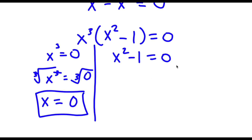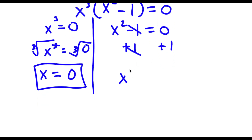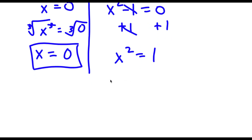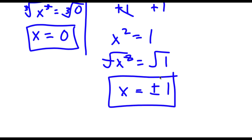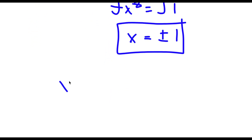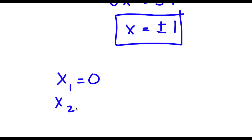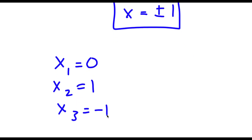Now I have x squared minus 1 equals 0, so I add 1 on both sides. These cancel out and I'm left with x squared equals 1. Taking the square root on both sides gives x equals positive or negative 1 — two more solutions to our problem. So our three solutions to this problem are 0, 1, and negative 1.